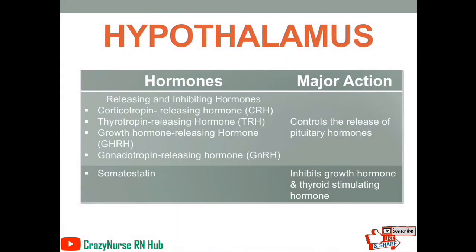First, let's discuss the first source of your hormones: the hypothalamus. It is composed of releasing and inhibiting hormones. Under that, we have corticotropin-releasing hormone, thyrotropin-releasing hormone, growth hormone-releasing hormone, and gonadotropin-releasing hormone. The action of these hormones is to control the release of pituitary hormones. We also have an inhibiting hormone, which is somatostatin. It inhibits growth hormone and thyroid-stimulating hormone.